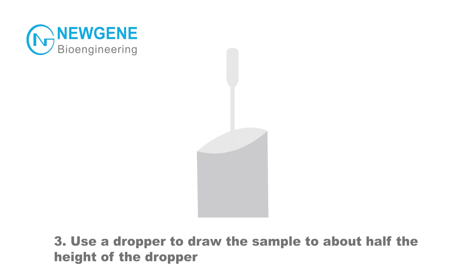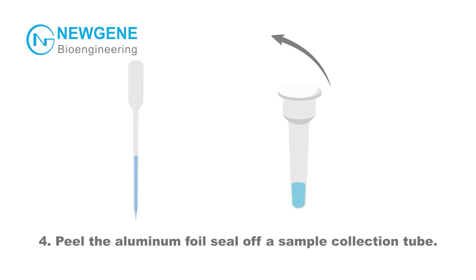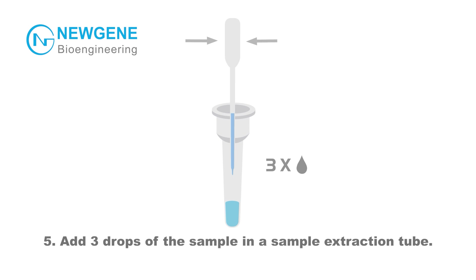Step 3: Use a dropper to draw the sample to about half the height of the dropper. Step 4: Peel the aluminum foil seal off a sample collection tube. Step 5: Add three drops of the sample into the sample extraction tube.